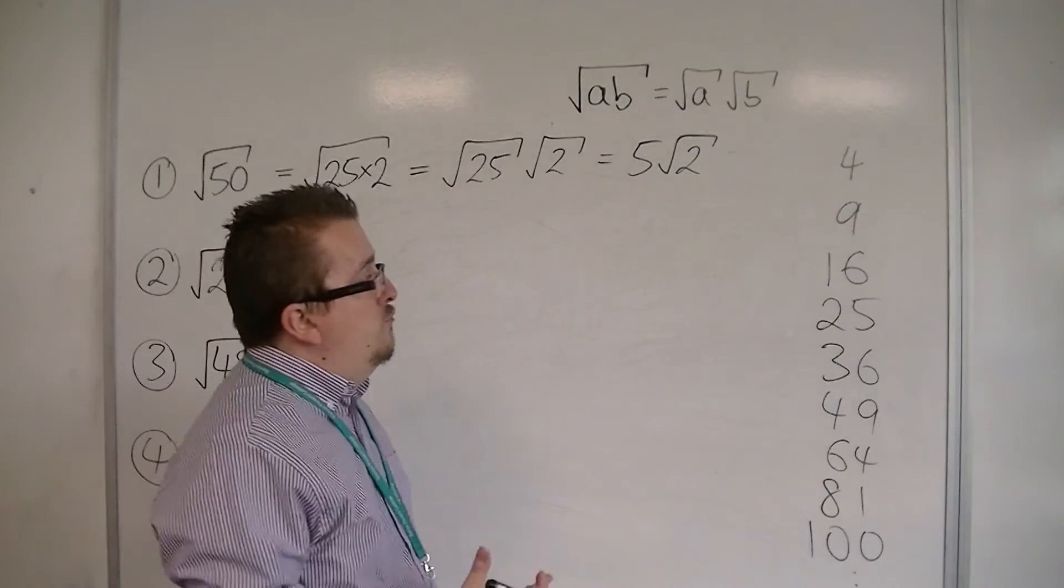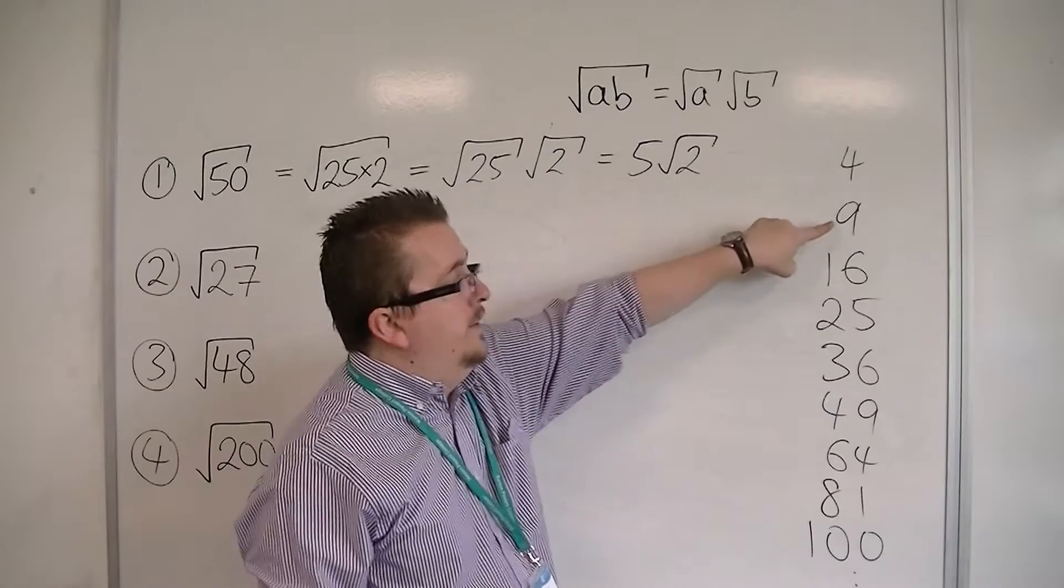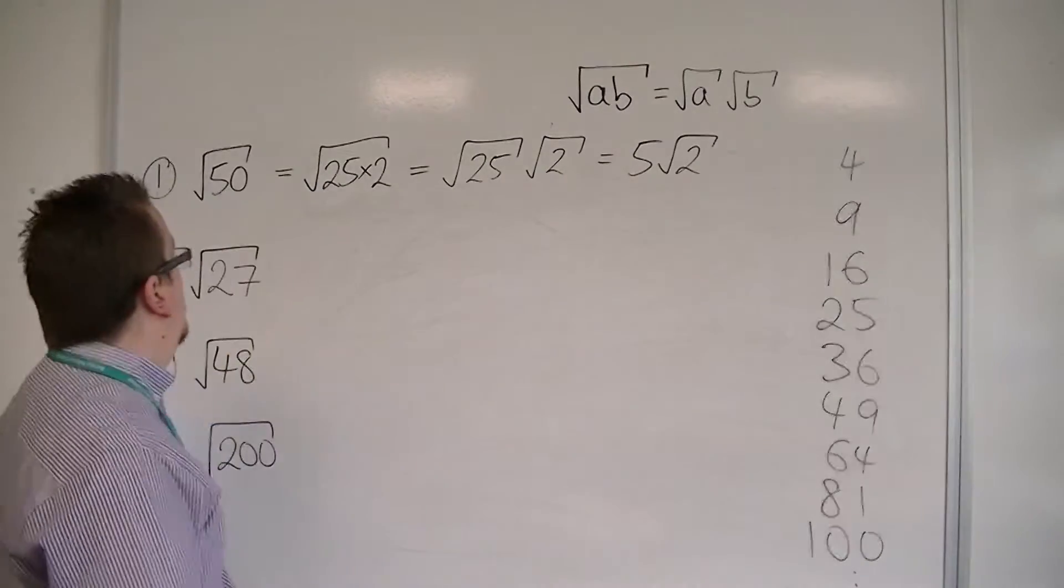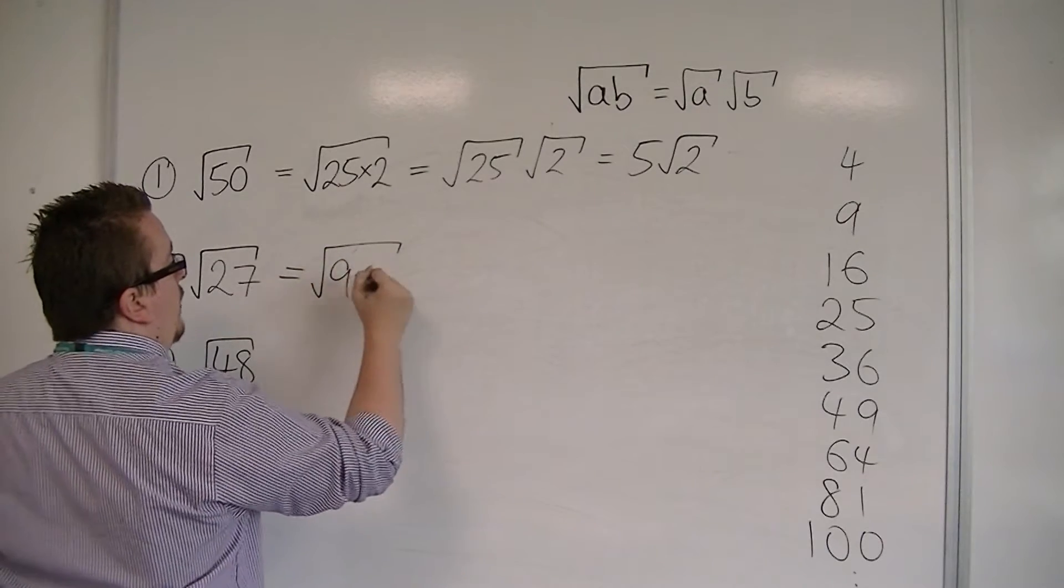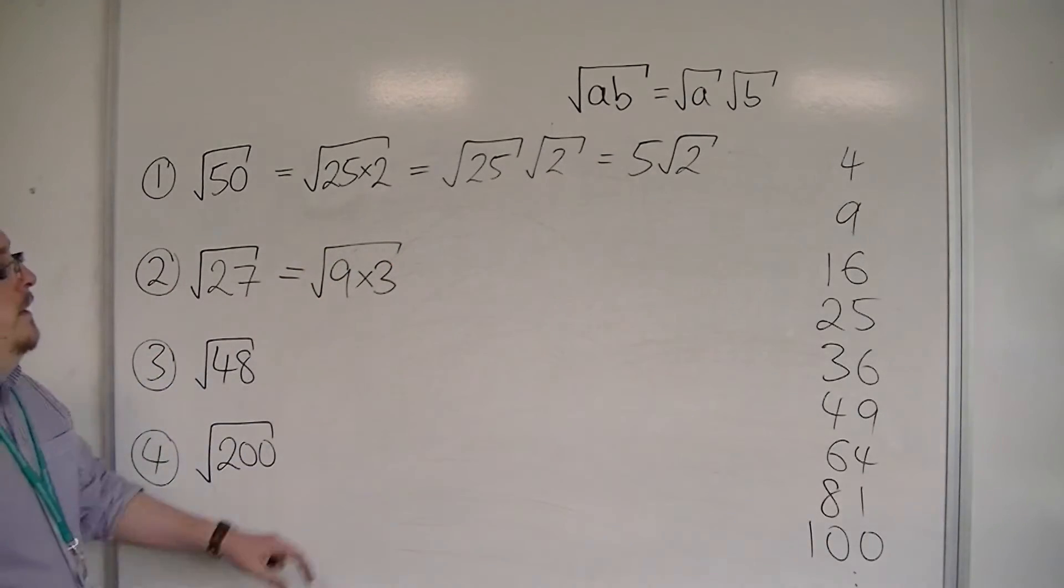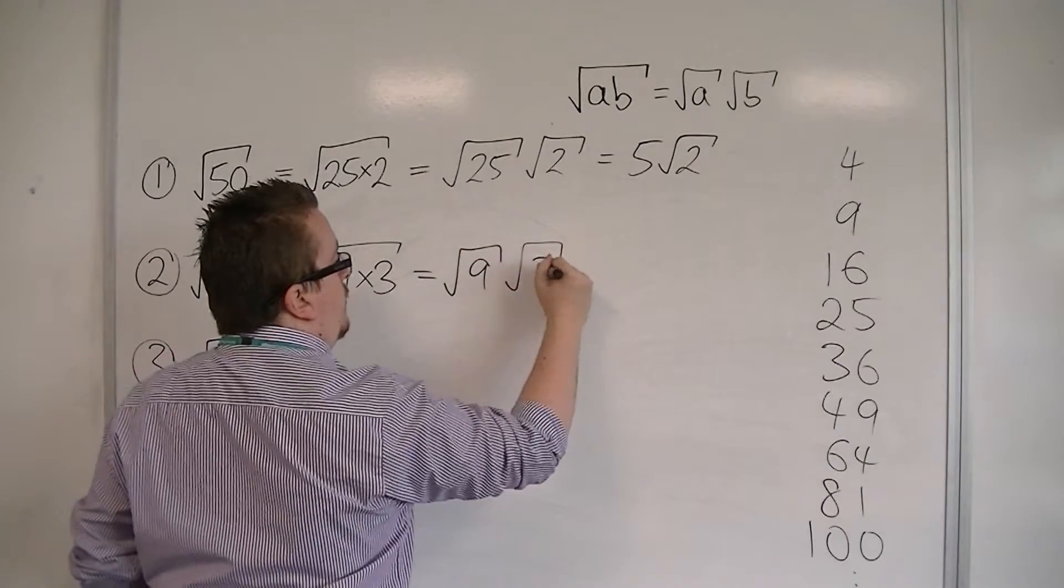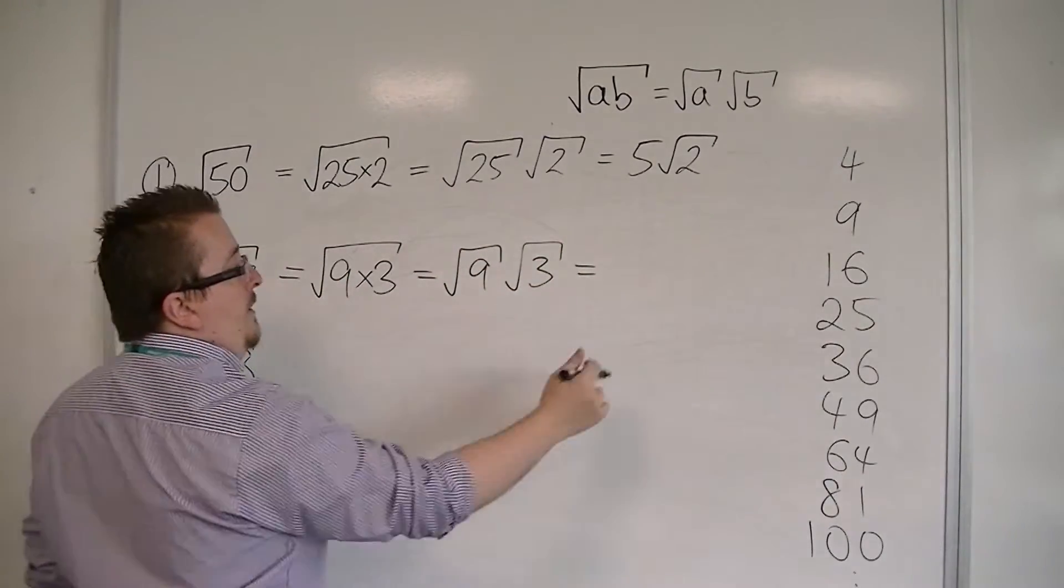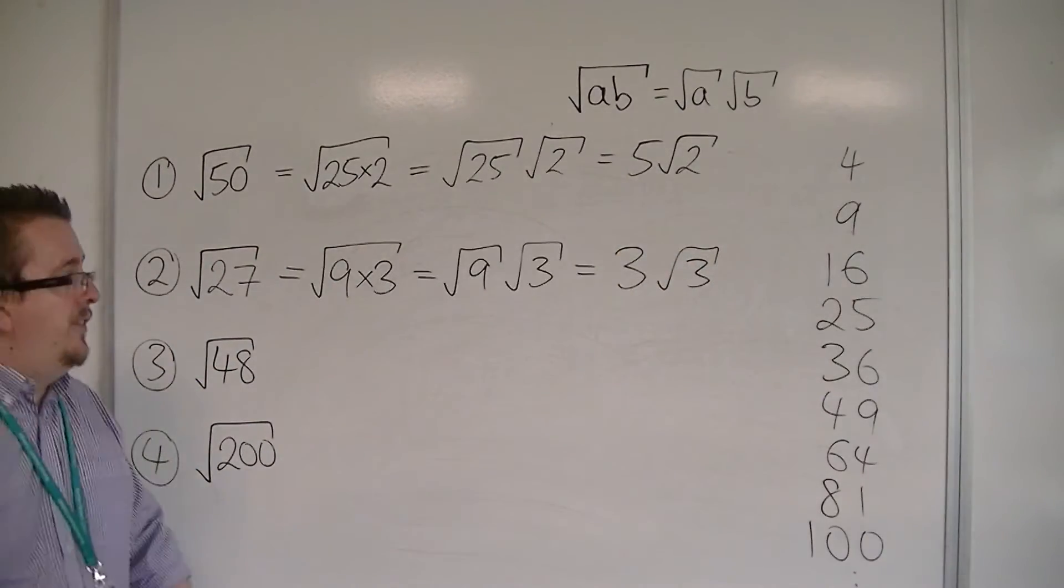For the second one here, root 27, I look down the list, try to find the factor, which in this case is 9. So I can write root 27 as 9 times 3. I can then split the surd into root 9 times root 3. Root 9 is 3, so this is 3 root 3. And it's as straightforward as that.